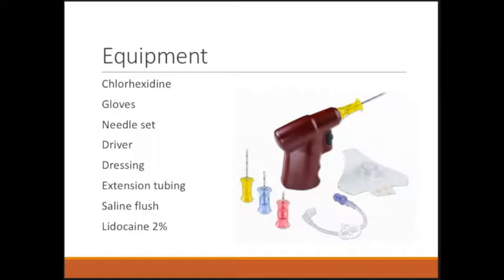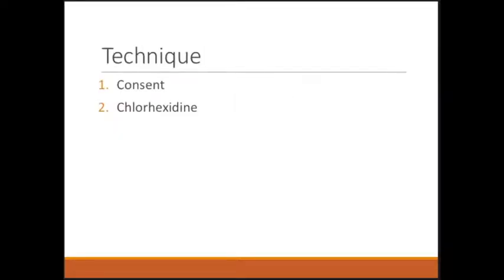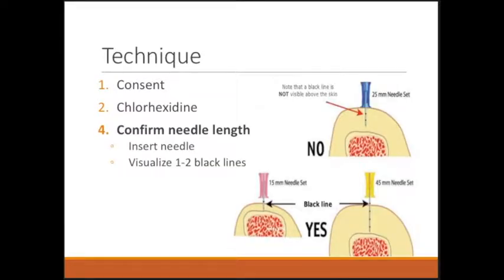The equipment you need includes chlorhexidine and non-sterile gloves — the sterility level is about the same as placing a peripheral IV; just sterilize the skin and keep the needle itself sterile. You'll also need the right needle, your drill or driver, a dressing and IV extension tubing, a saline flush, and consider lidocaine in conscious patients. Consent the patient if they're alert and oriented, then scrub the skin with chlorhexidine. There are three different needle sizes: yellow being the longest, blue being medium, and pink being the shortest.